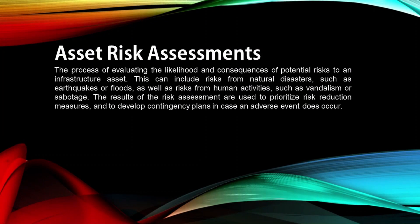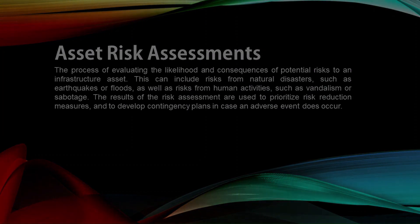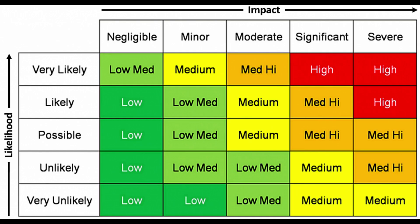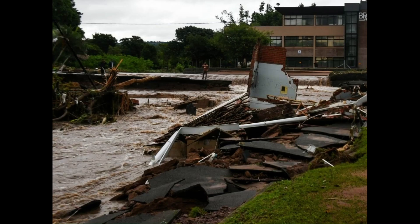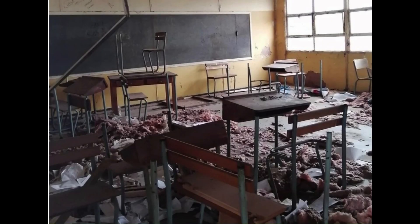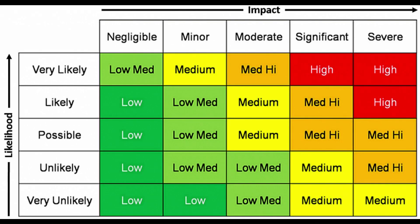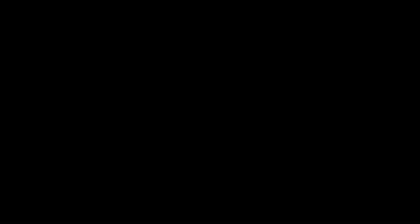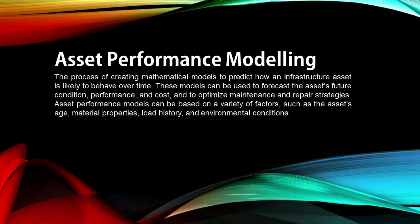Asset risk assessment is the process of evaluating the likelihood and consequences of potential risks to an infrastructure asset. This can include risks from natural disasters such as earthquakes or floods, as well as risks from human activities such as vandalism or sabotage. The results of the risk assessment are used to prioritize risk reduction measures and to develop contingency plans in case an adverse event does occur.